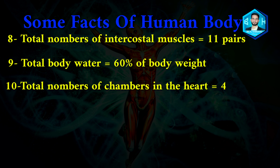Number ten: total number of chambers in the heart is four, which includes two atria and two ventricles. In the human body, the heart has four chambers — two atria and two ventricles.